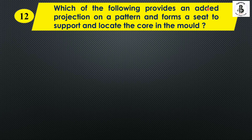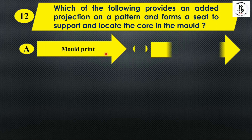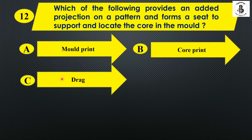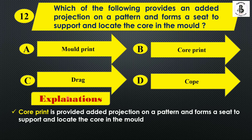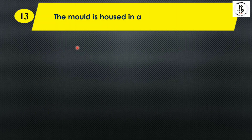The next question: which of the following provides added projections on a pattern and forms a seat to support and locate the core in the mold — option A: mold print; option B: core print; option C: drag; option D: cope. Core print provides support to the core — it adds projections onto the pattern and forms a seat to support and locate the core. The core is used for making hollow components, so the right answer is option B.